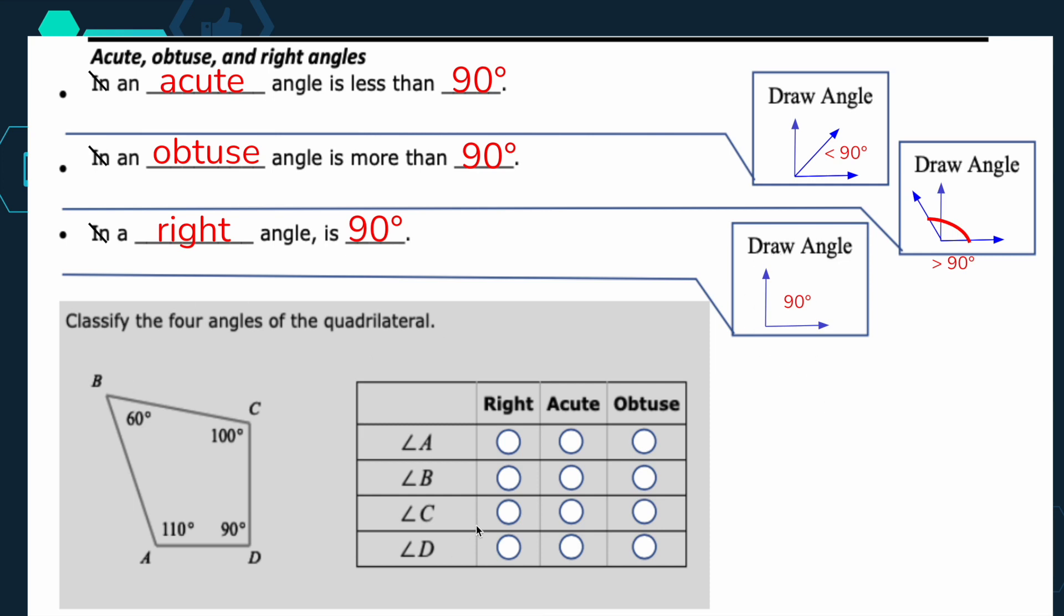So now what we're going to do is we're going to classify the four angles of this quadrilateral. Quadrilateral just means a four-sided figure. So angle A, if I go down here to angle A, well, 110, that's more than 90. So that's going to be obtuse.